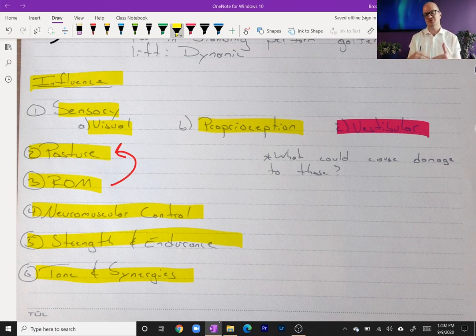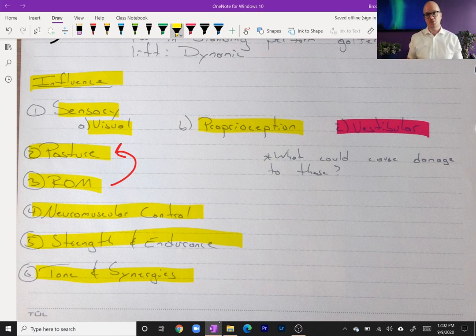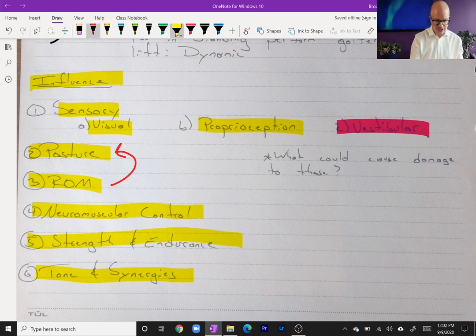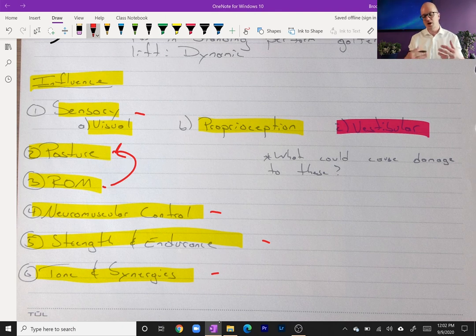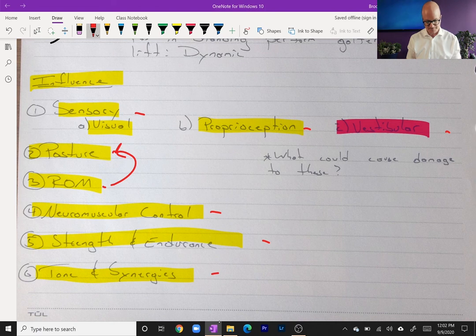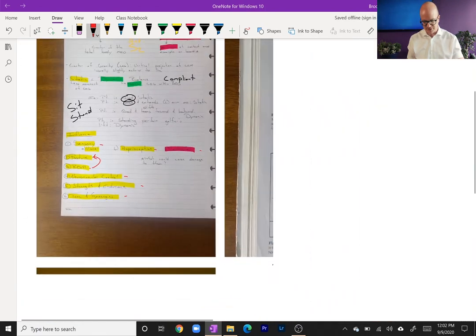So all of those things, and then within those things there's multitudes of things—all of those things have to work pretty much at 100% efficiency to have the best balance possible. Any deviation in any of these sections is going to start to throw off balance, or other systems are going to have to compensate and pick up for the slack. Okay, so those are our influences.